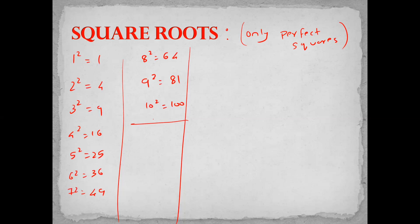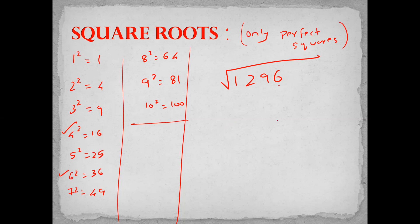Now let us find the square root of 1296. This is a perfect square. Observe that the last digit is 6. The last digit will be 6 for which number? If the number ends in 4 or if the number ends in 6 — there is no other number whose square ends in 6. So our final answer should end in either 4 or 6. Let us check which is correct.